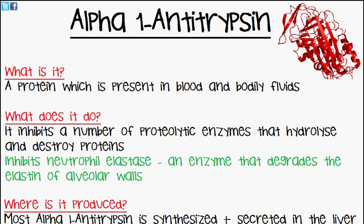In today's video we're going to be discussing alpha-1 antitrypsin. What is alpha-1 antitrypsin? Well, it's a protein which is present in the blood and in the bodily fluids.